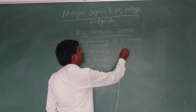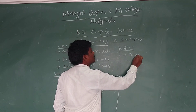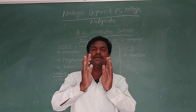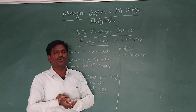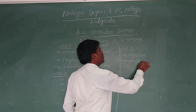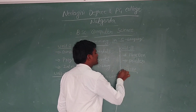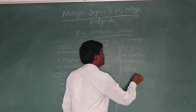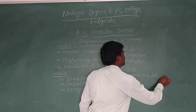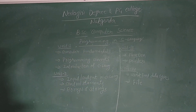In the third unit, we will discuss about functions — a function is a block of programming code. We will also discuss about a concept called pointers. Coming to the fourth unit, we have two main topics: user-defined data types, and the concept of files.